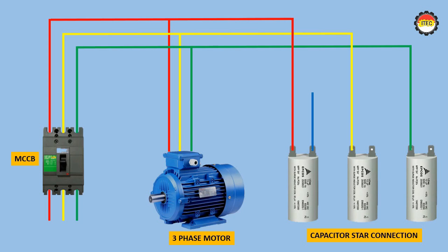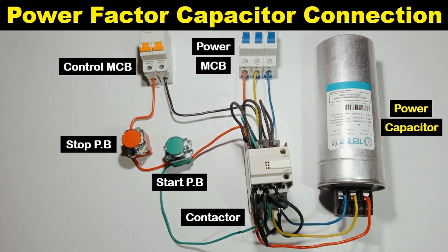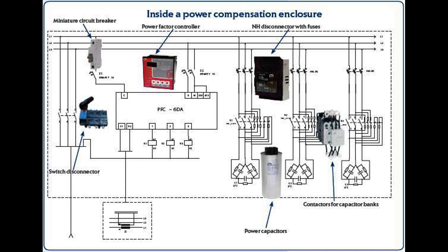Harmonic distortion can degrade power quality, leading to equipment malfunction, increased losses, and reduced efficiency in electrical systems. Detuned capacitors improve power quality by reducing harmonic distortion, resulting in smoother voltage waveforms and more reliable operation of electrical equipment. Resonance occurs when the natural frequency of the electrical system matches the frequency of harmonic currents or voltages. Detuned capacitors prevent resonance by tuning to a frequency different from the harmonic frequencies, avoiding amplification of harmonic voltages and mitigating the risk of equipment damage.